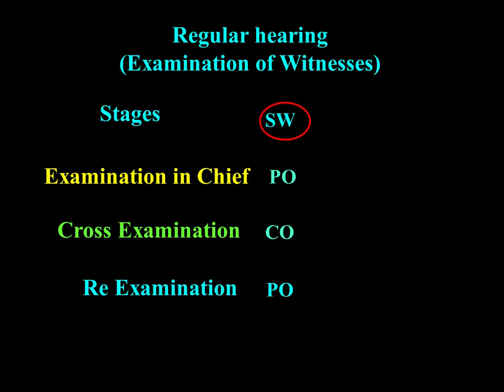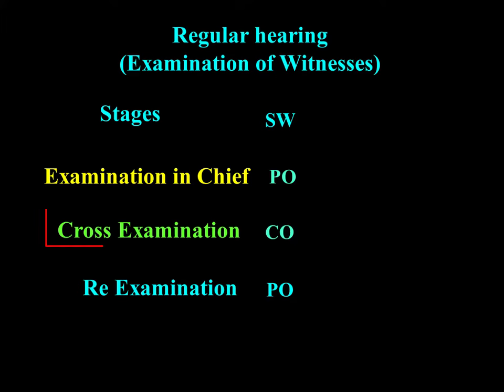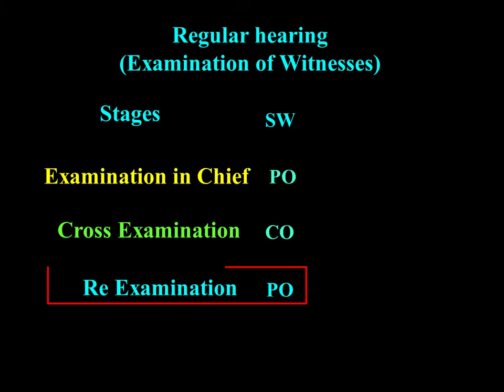When the state witness comes first, examination in chief will be done by the presenting officer, cross-examination will be done by the charge employee, and re-examination will again be done by the presenting officer. Examination in chief, which is the first stage, is the process by which the witness narrates before the inquiry officer the facts which are within his personal knowledge.